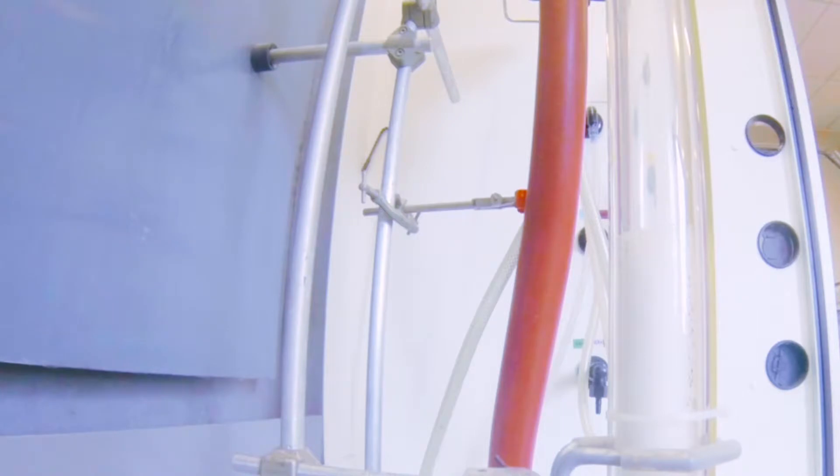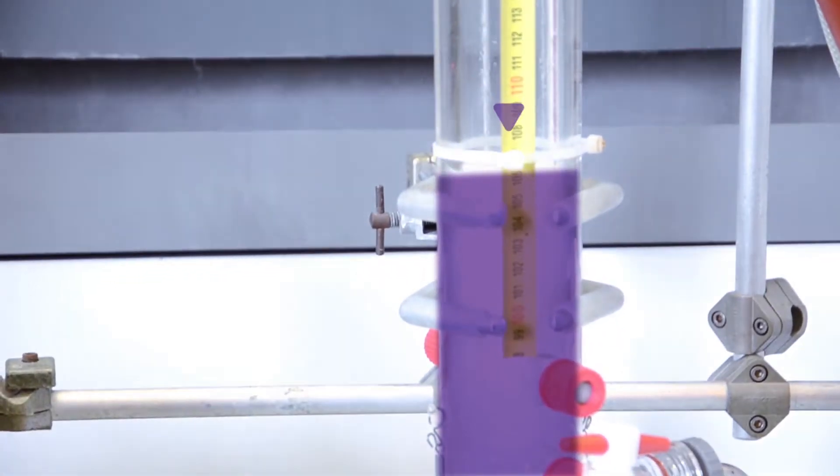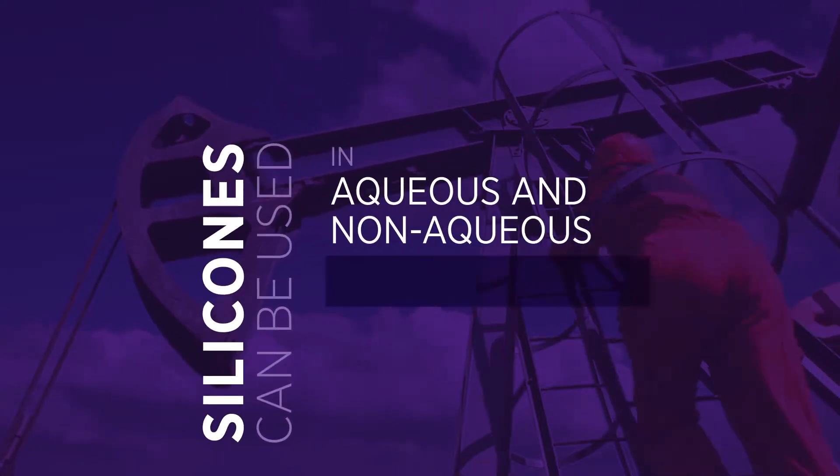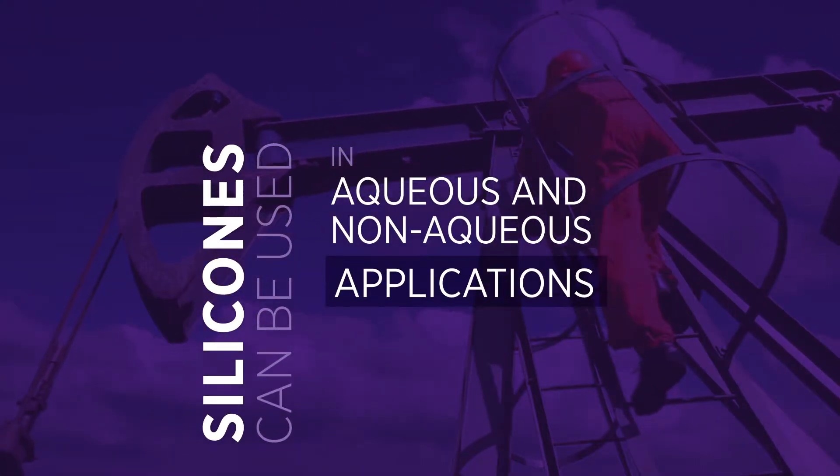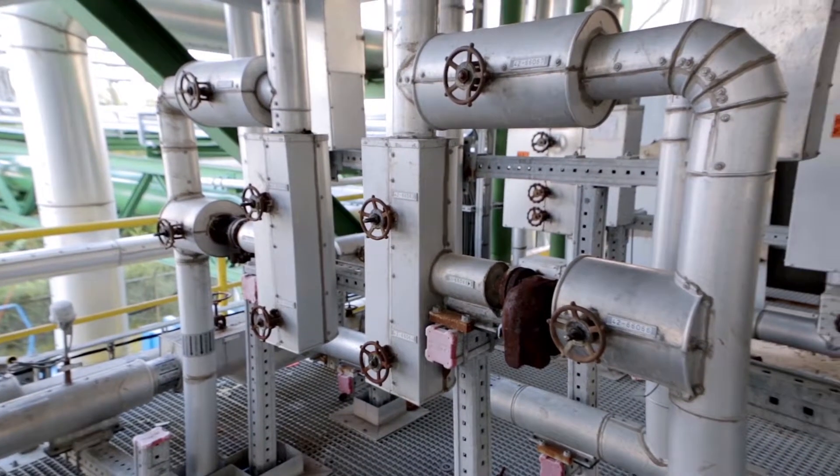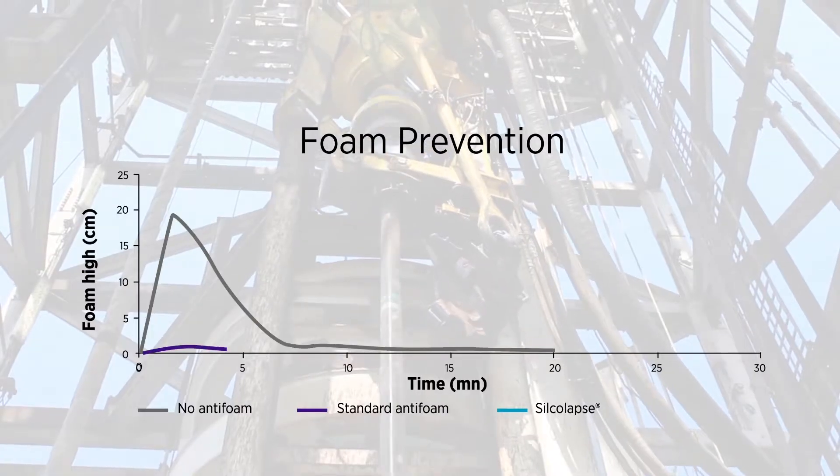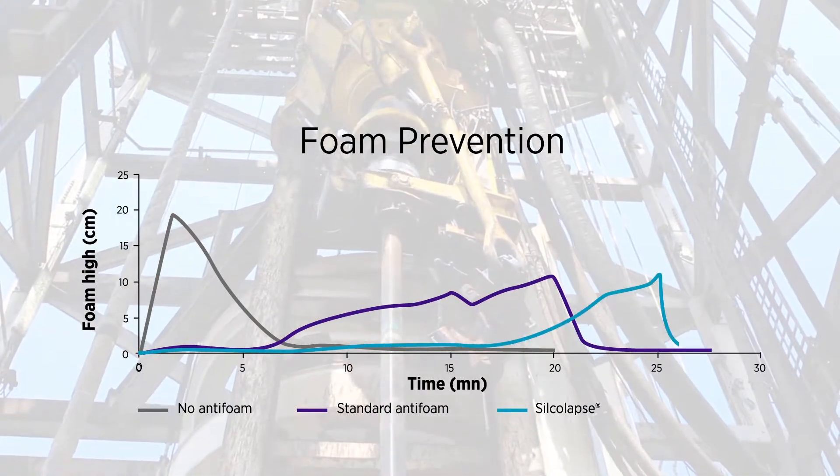In almost every process in the industry, because unlike organic alternatives, silicons can be used in non-aqueous applications. Oil and gas operators are able to maximize the productivity of their processes thanks to Silcalapse.